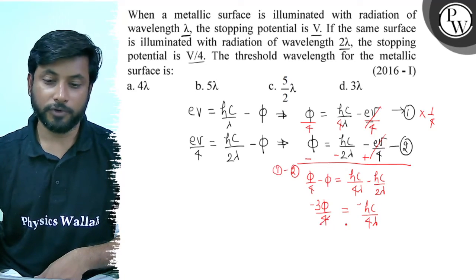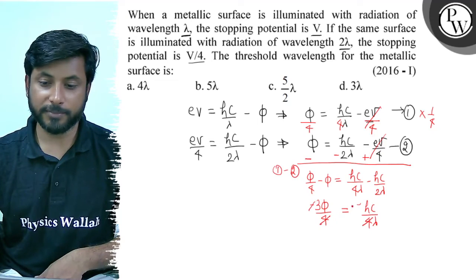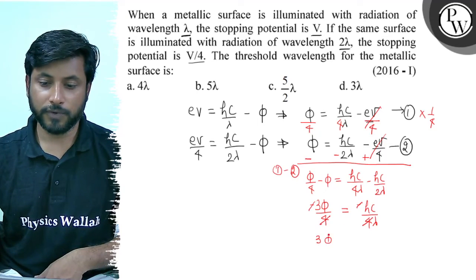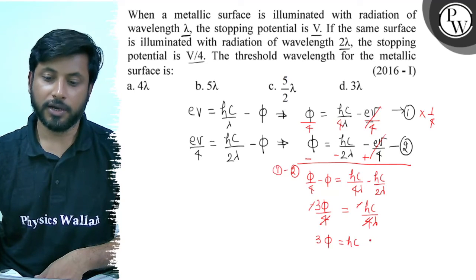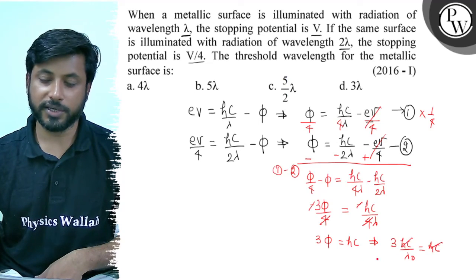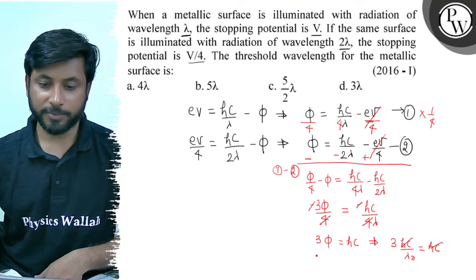The 4 cancels out and minus cancels out. 3 times phi equals to hc by lambda. And we know that phi equals to hc by lambda not. So we have 3 hc by lambda not equals to hc by lambda.